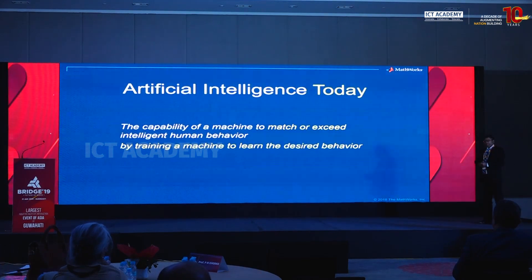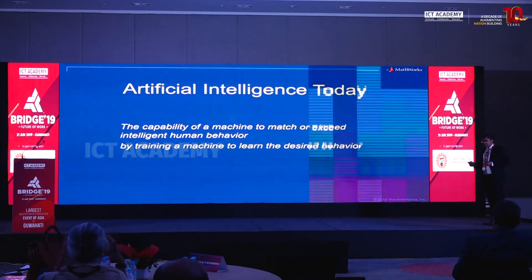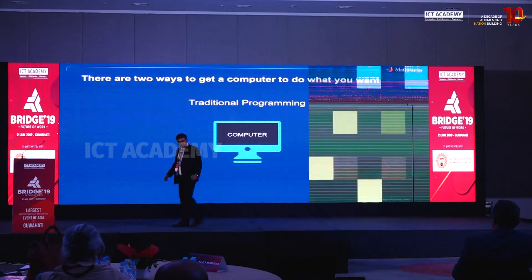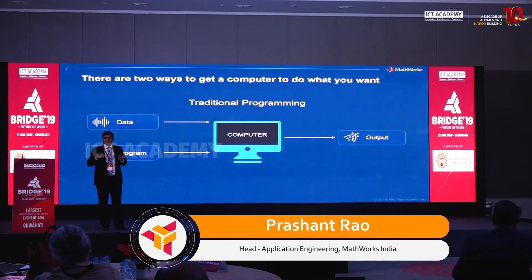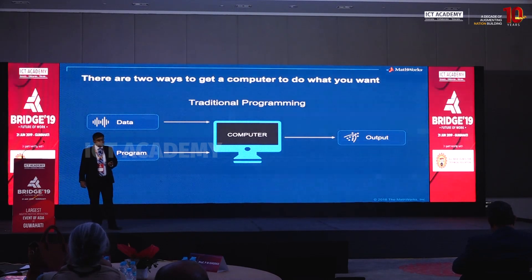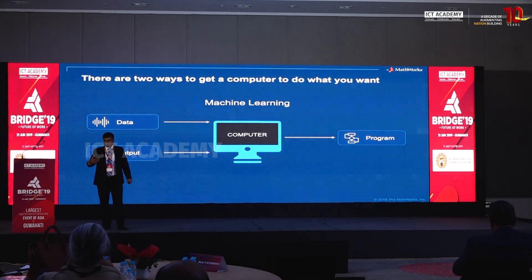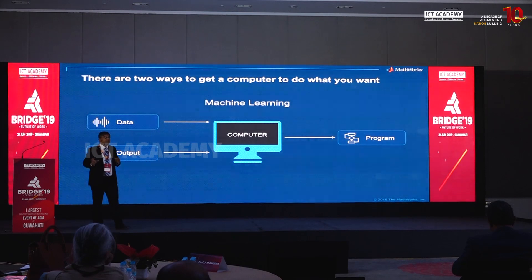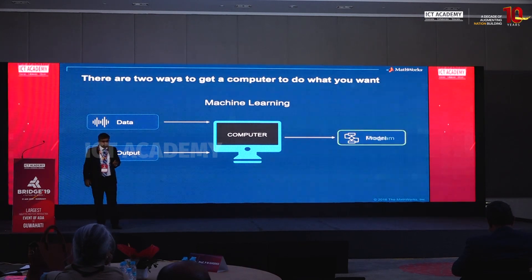So let's get down to it. Firstly, I'll define what is AI. AI, as we define it from a technical perspective today, is the capability of a machine to match or exceed intelligent human behavior by training that machine to learn that desired behavior. There are two ways to get a computer to do what you'd like it to do. The traditional approach: we have data and we write a program that processes that data and gives us the desired output. Using a technique called machine learning, this flips it — we give the data to the computer as well as the desired output, and the computer trains a model.